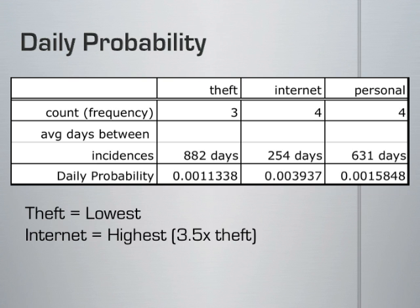That means I am likely to incur one incidence of theft in less than three years, or 1,000 days. The statistic is higher for personal assaults, predicted at 1.6 in 1,000 days, or about three times in five and a half years. The most frequent threat is on the internet. The probability for an internet-related incident is 4 in 1,000 days, which is three and a half times more likely to occur than a theft incident.